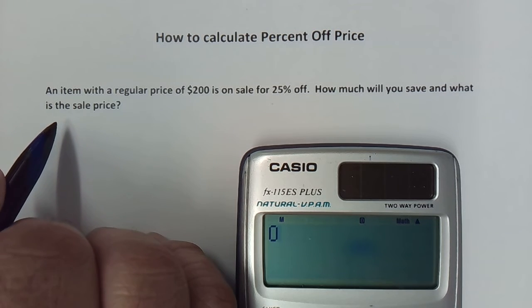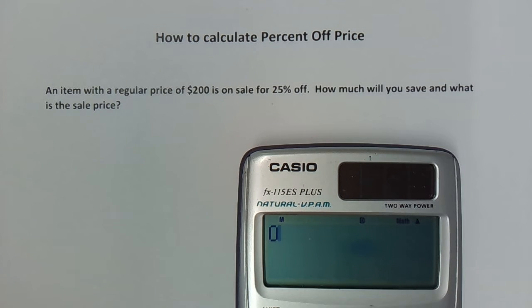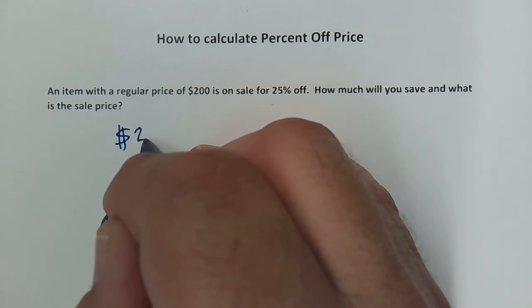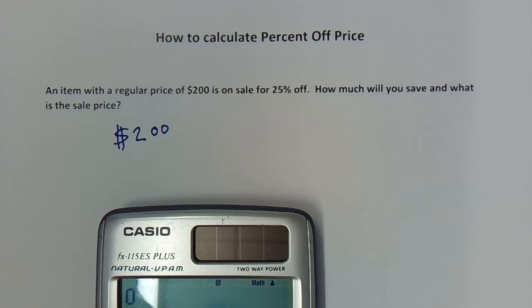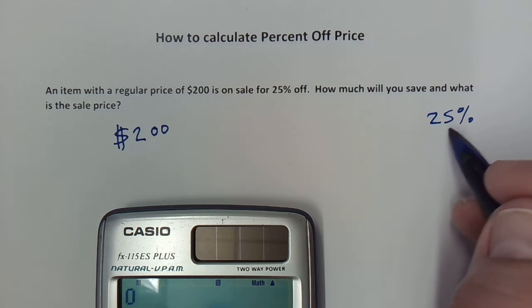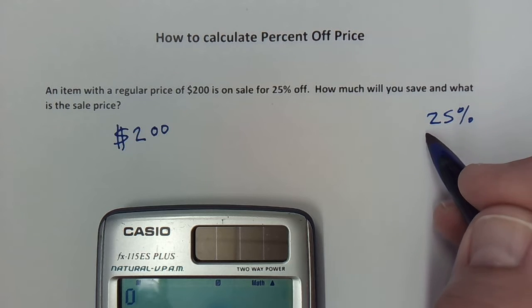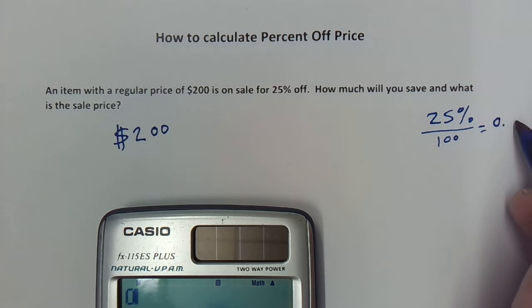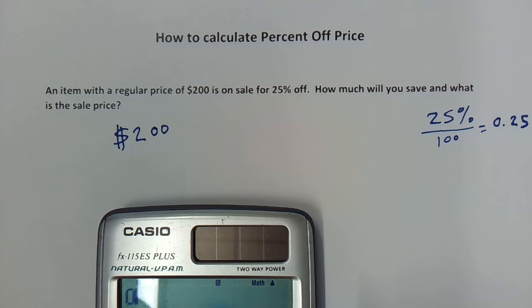In this first problem, an item with a regular price of $200 is on sale for 25% off. We start with the $200 original price and we've got 25% off. Remember, when you've got a percentage to work with, we need to turn it into a decimal by dividing by 100, which moves the decimal place over two spots — so 25% becomes 0.25.